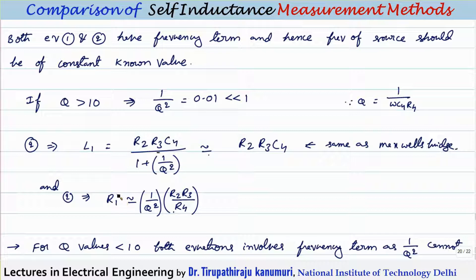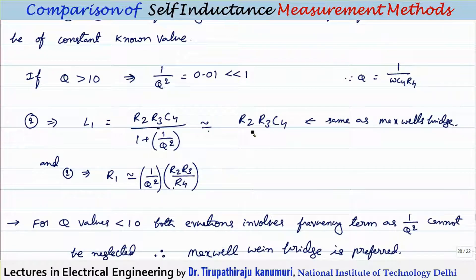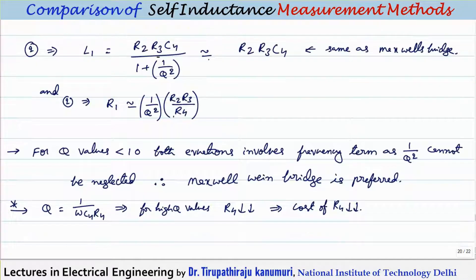For the resistance equation, R1 ≈ R2R3/(R4 × Q²). Since 1/Q² ≈ 0.01, R ≈ 0.01 × R2R3/R4, making frequency-independent calculation easy. In both equations, R2, R3 appear together, while C4 and R4 are different — so C4 and R4 are the independent variables used to obtain balance.